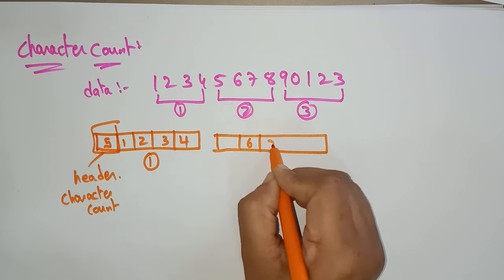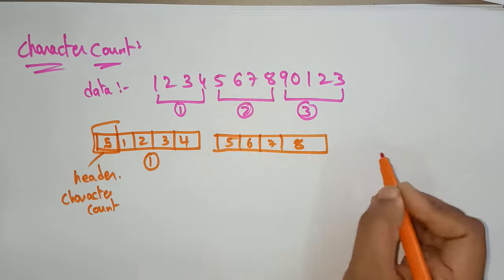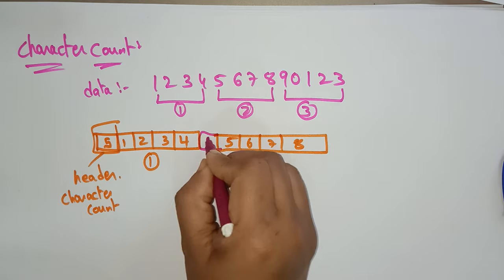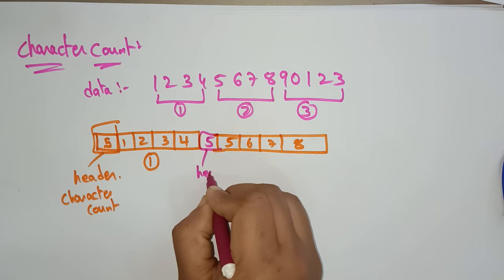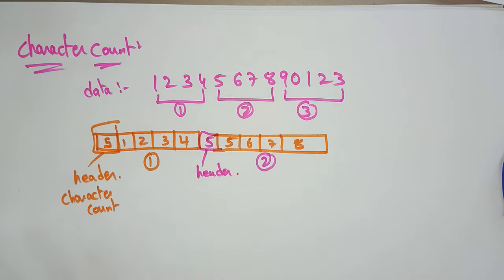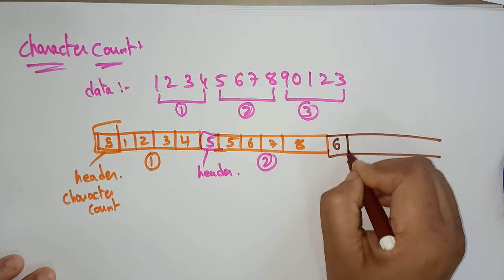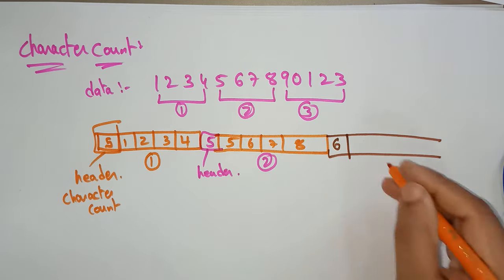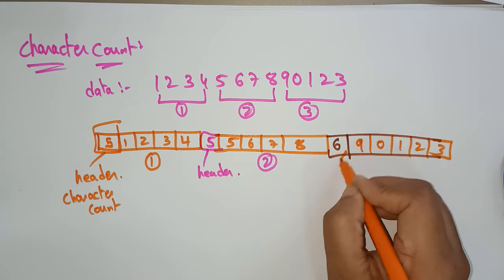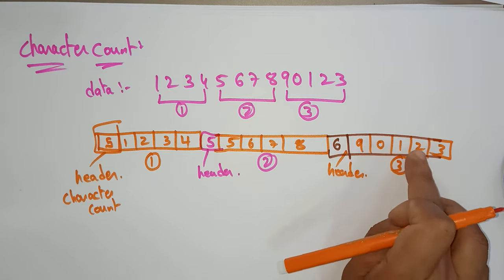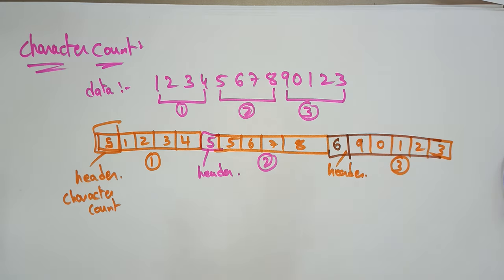The second frame has data 5, 6, 7, 8 — header is 5, meaning including the header there are 5 total. The remaining is the data. The third frame consists of 9, 0, 1, 2, 3 — header is 6, meaning 5 data bits plus the header itself = 6. This is how the sender sends the message. The receiver receives the data and checks the header. Whenever the receiver sees 5, it counts 1 through 5 — that marks the end of that frame. The header specifies the number of characters present in the frame.